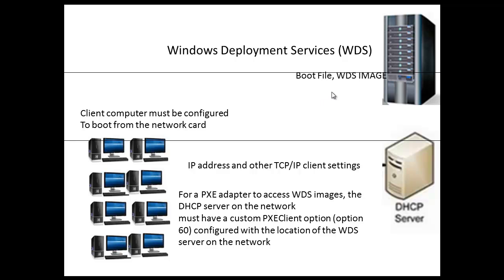But first, you have to get something from the DHCP server besides the IP address and the other client settings. You have to get the PXE client option, which is option 60. This option contains the location of the WDS server on the network. So, before the WDS server can deploy the images to these client computers, the DHCP server gives option 60, and that option gives you the location of the WDS server on the network.